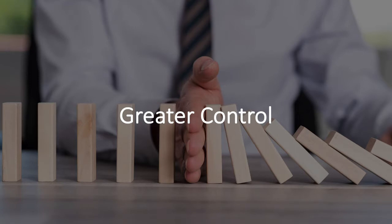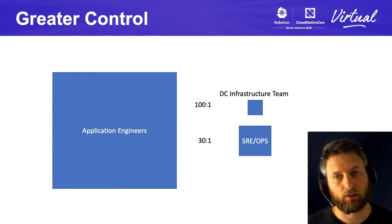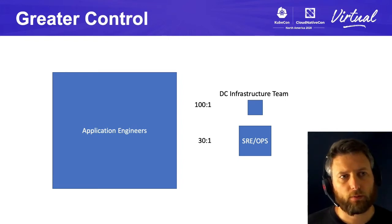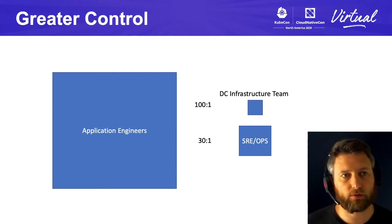We want to prevent outages. We need to exert greater control over what our application teams can do than just saying, here's kubectl, here's some YAML files, go have at it. You do that and you're going to have outages because people just don't understand Kubernetes. You also want to limit the Kubernetes objects you have, potentially apply labels, and keep them from interfering with each other.